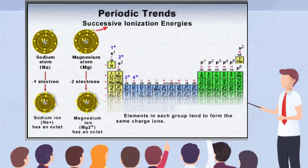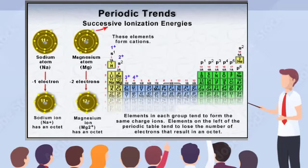However, the trend for atoms to lose electrons does not continue all the way across the periods in the periodic table. The elements on the right side of the table tend to form negative ions by gaining electrons. This trend is related to the energy change associated with adding an electron, or electron affinity.